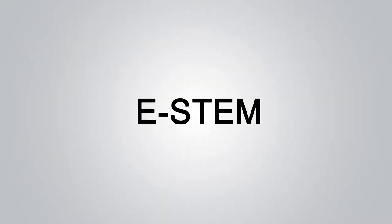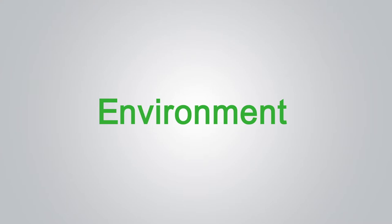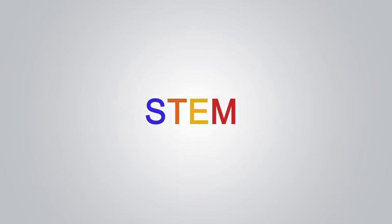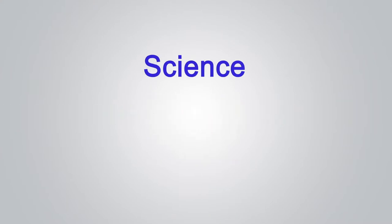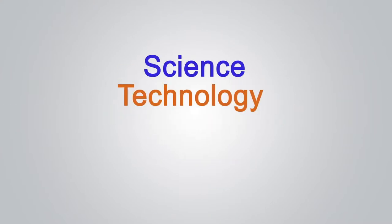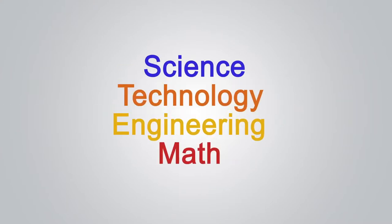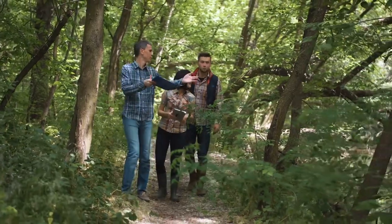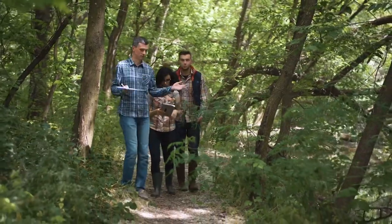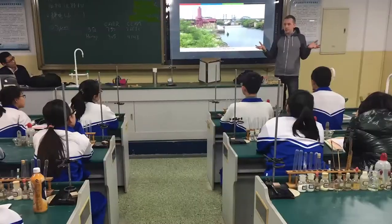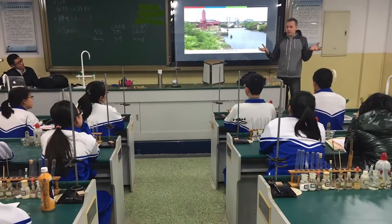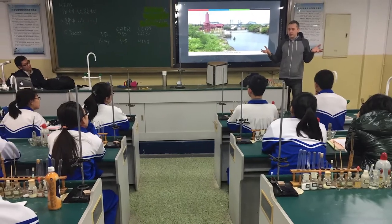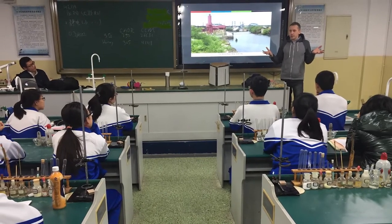E-STEM combines two ideas. E stands for the environment and STEM means science, technology, engineering, and math. You can use the environment as a fun pathway to STEM learning or use STEM subjects to inform students' environmental actions.